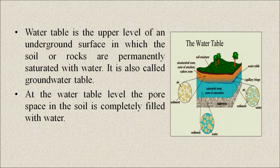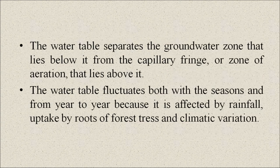Now, the water table. The water table is the upper level of an underground surface in which the soil or rocks are permanently saturated with water. It is also called the groundwater table. At the water table level, the pore space in the soil is completely filled with water. The water table separates the groundwater zone that lies below it from the capillary fringe or zone of aeration that lies above it.